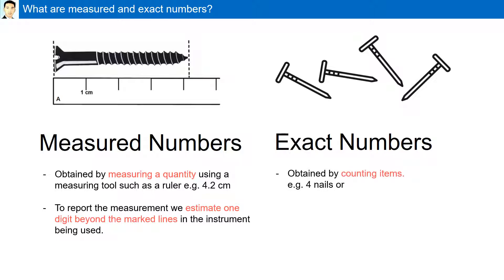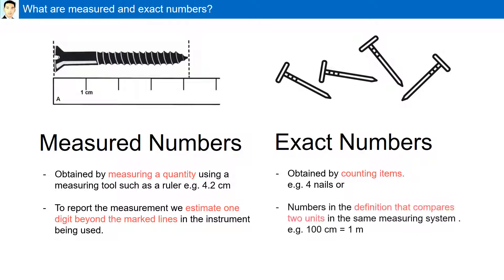Exact numbers, on the other hand, are obtained by counting items. For example, four nails. Or the numbers in the definition that compares two units in the same measuring system. For example, 100 centimeters is equal to 1 meter.